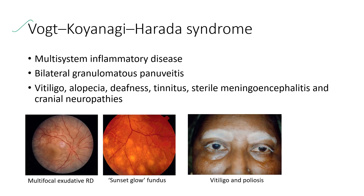Next is Vogt-Koyanagi-Harada syndrome. It is a multi-system inflammatory disease. The patient presents with bilateral granulomatous panuveitis, and a picture shows multifocal exudative retinal detachment. The sunset glow fundus is seen in VKH disease. The systemic features include vitiligo, alopecia, deafness, tinnitus, sterile meningoencephalitis, and cranial neuropathies.